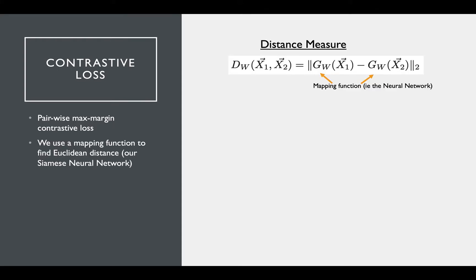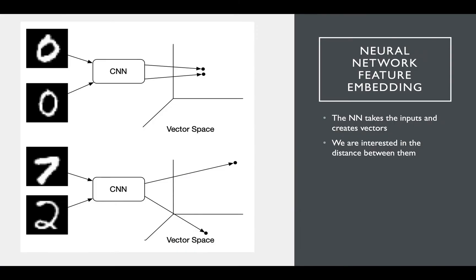Here the loss calculation centers around taking the Euclidean distance between the embeddings of the input. In this formula we treat the neural network as the function GW here, noted as the mapping function. Remember that the neural network is finding a low dimensional vector that represents the input. GW is the mapping function to find the vector, and GW of X1 would be the vector here. What we're really interested in is DW, which is the distance between these.